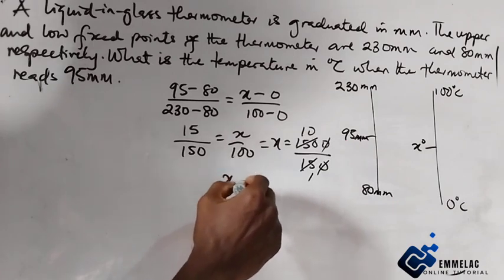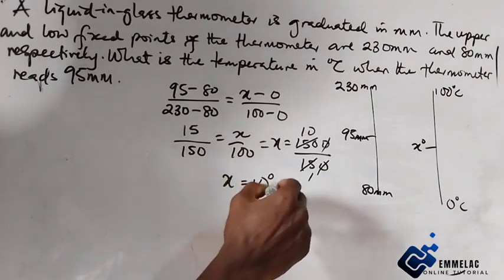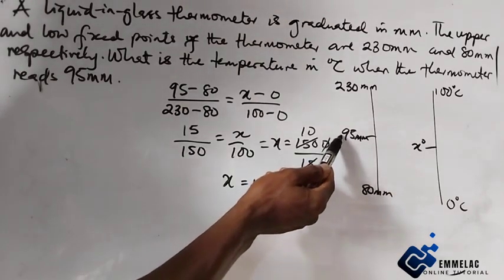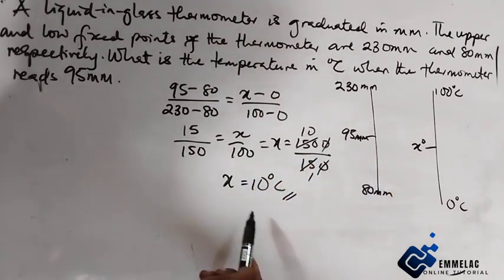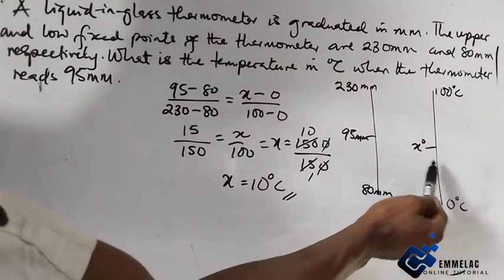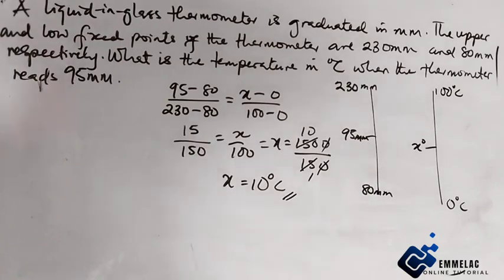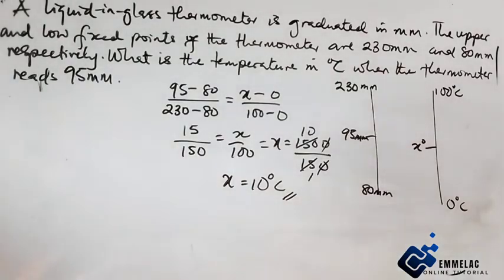So x equals 10 degrees centigrade. When the reading is 95 millimeters, it is equivalent to 10 degrees centigrade. If you found this video helpful, please share it with others. Thank you and God bless you.